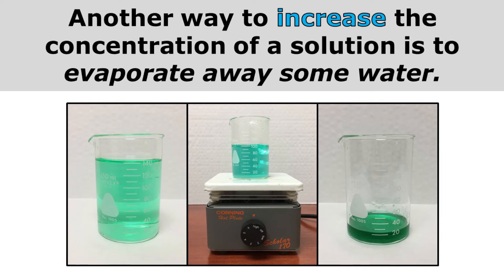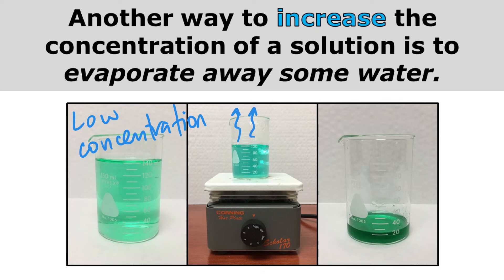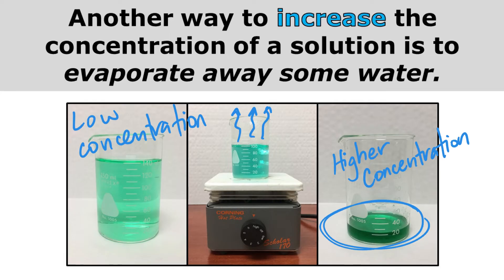Another way to increase the concentration of a solution is to evaporate away some of the water. On the left, I have a pretty low concentration. I put it on a hot plate and evaporated away some of the water, but didn't evaporate away any of the food coloring. On the right, I ended up with a higher concentration — you can see it's a darker green because I have the same amount of food coloring in a lot less water. That solution has become more concentrated.